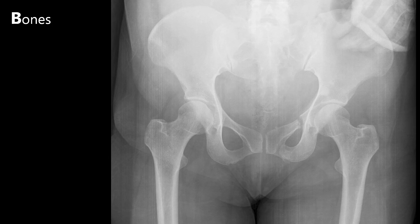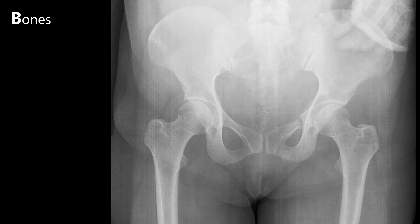Moving onto the pelvis, this x-ray shows a fracture in the superior and inferior pubic rami. These fractures occur together, as the pubis is a rigid structure, so one rami cannot break without the other. Notice here the asymmetry between the two obturator foramina. This patient also has diastasis of the left sacroiliac joint as a result of these pelvic fractures. Pubic rami fractures are also typically caused by falls in patients with osteoporosis.